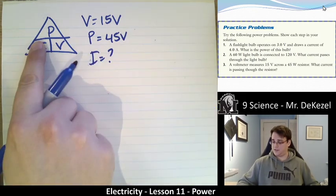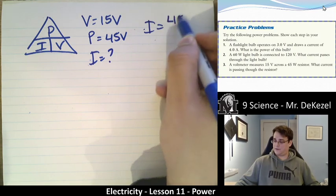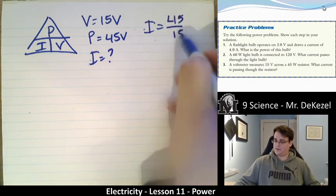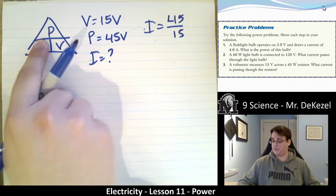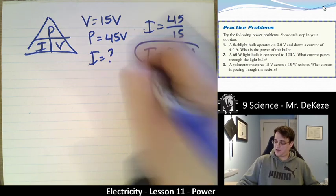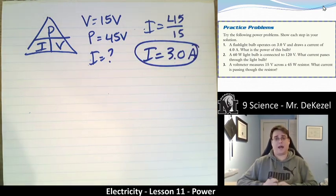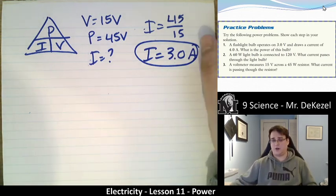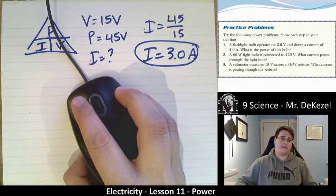So we cover up current. We have 45 divided by 15. To cover up current, that's power divided by voltage. 45 divided by 15 for a current of 3 amps. So there we go. Calculating power is just as easy as using Ohm's law. As long as we know two of them, we can find the other.